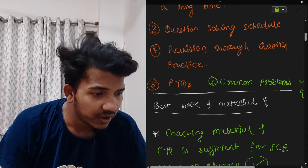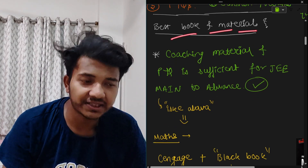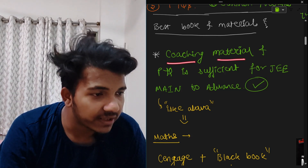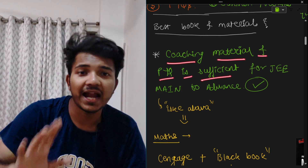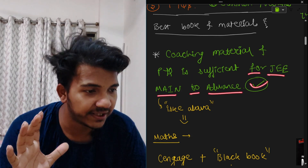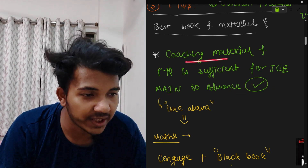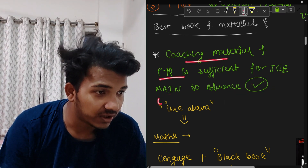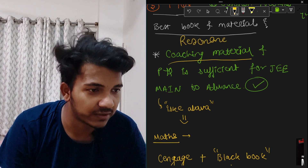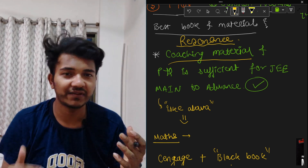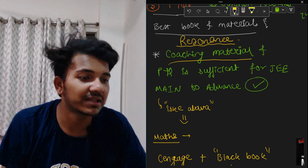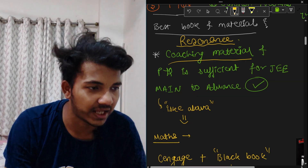First of all, let's see what the best books and materials are. Point number one, and a very important point: coaching material and PYQs are sufficient and enough for your JEE preparation, from Main level to Advanced level. This is your enough and sufficient resource. I always suggest Resonance, because Resonance is structured and scientifically made. The questions behind the exercises are very well designed.